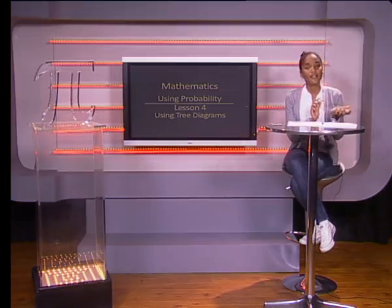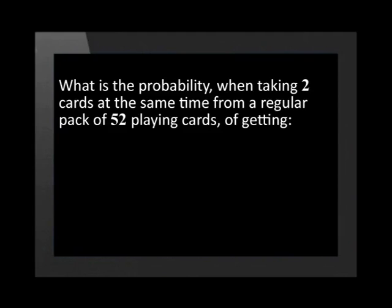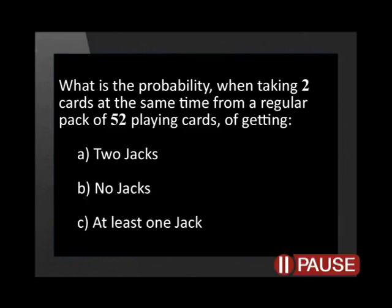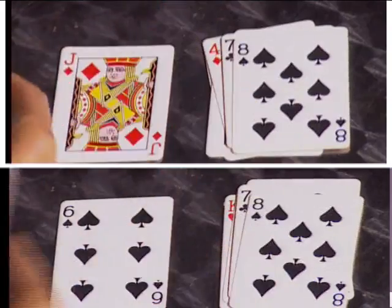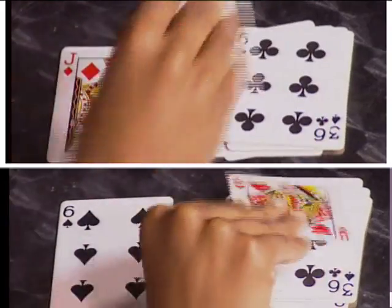Remember, for dependent events, the outcome of the first event does have an effect on the outcome of the second event. Our example involves a pack of playing cards. What is the probability when taking two cards at the same time from a regular pack of 52 playing cards of getting two jacks, no jacks, or at least one jack? Think of it as taking one card and then another without replacing the first card. The probability of drawing the second jack depends on whether a jack was taken out on the first draw.